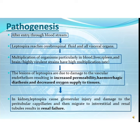Now coming to the pathogenesis. After entry through the bloodstream, Leptospira reaches cerebrospinal fluid and all visceral organs. The severity of tissue damage in acute infection is related to the rate of multiplication of the organisms, particularly in blood, liver, spleen, and brain.